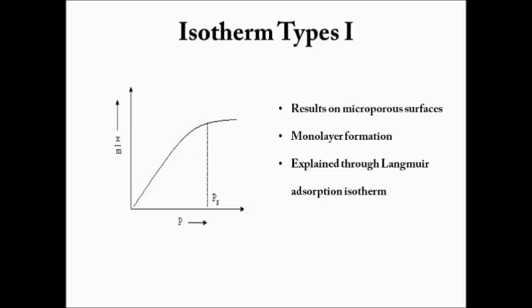The type 1 isotherm is well explained by the Langmuir theory, as it is limited to the completion of a single monolayer of adsorbate at the surface of the particular substance.